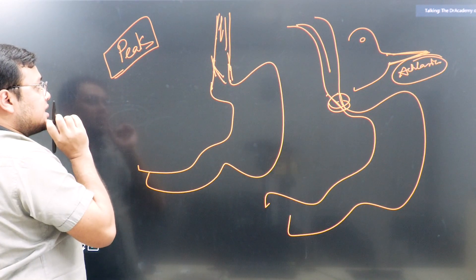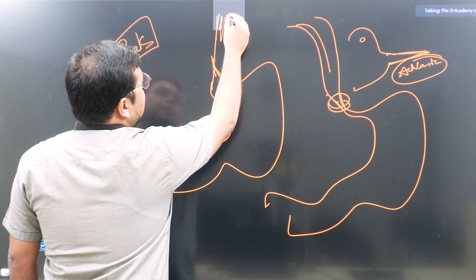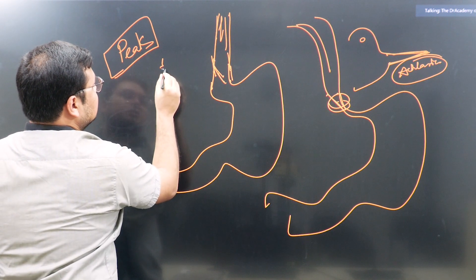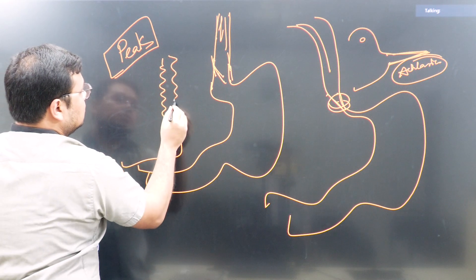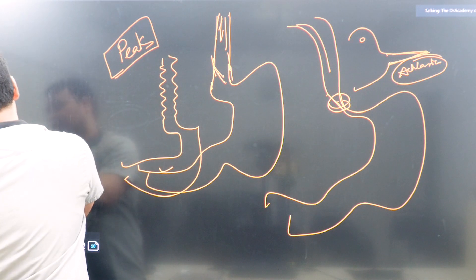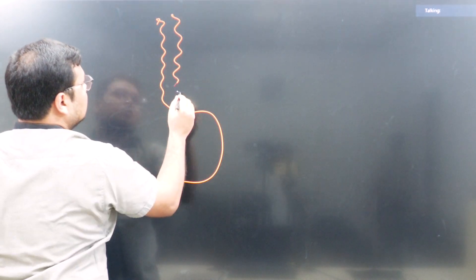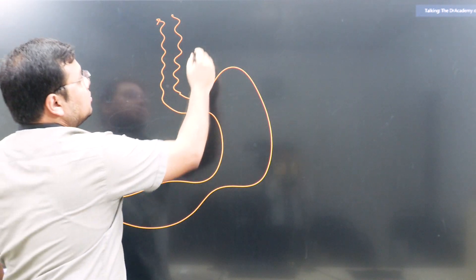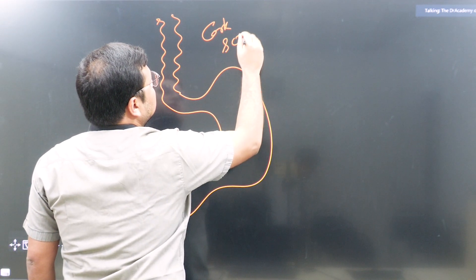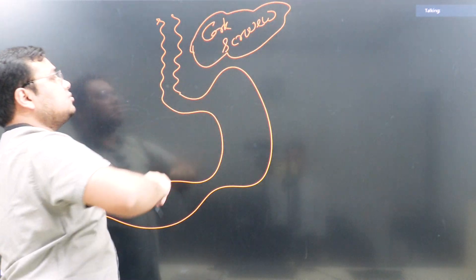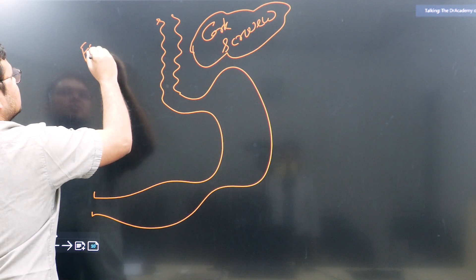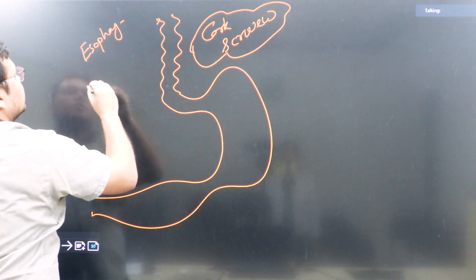There is also the corkscrew sign. The corkscrew sign means the contractions of the esophageal muscles are very irregular, giving the esophagus a corkscrew appearance. The corkscrew sign can be found in esophageal spasm.